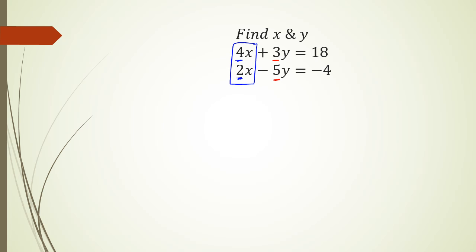But obviously, the two coefficients are different. So what I can do is I can take this second equation and I could actually multiply it, the entire equation by 2, so that I can make the 2x into a 4x. So watch this. What I'm trying to do is take that second equation and multiply the whole thing by 2, which means my second equation now is going to be 2x times 2 is 4x, minus 5y times 2 is negative 10y, and then negative 4 times 2 is negative 8.